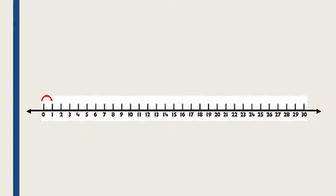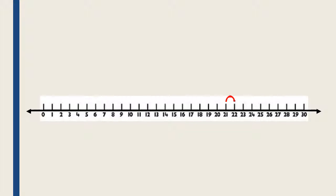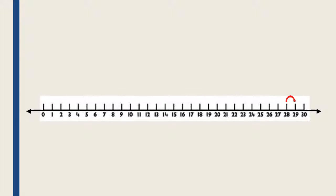Zero, one, two, three, four, five, six, seven, eight, nine, ten, eleven, twelve, thirteen, fourteen, fifteen, sixteen, seventeen, eighteen, nineteen, 20, 21, 22, 23, 24, 25, 26, 27, 28, 29, 30.